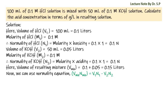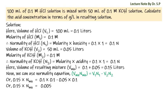We assume V1·N1 is for acid and V2·N2 is for base. So: 0.15 × N_mixture = (0.1 × 0.1) − (0.05 × 0.1), giving 0.15 × N_mixture = 0.005. Therefore N_mixture = 0.005 / 0.15 = 0.033 N. The normality value is positive, so we can conclude that the resulting solution is acidic in nature.